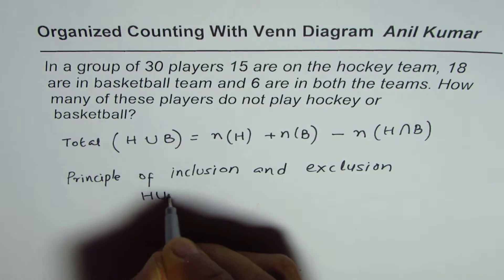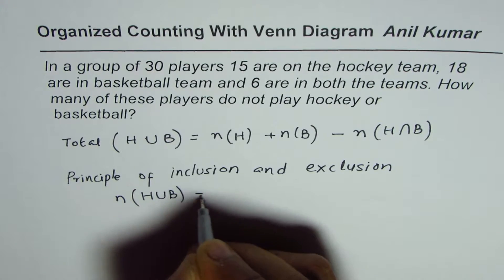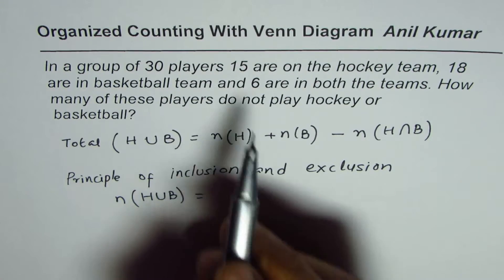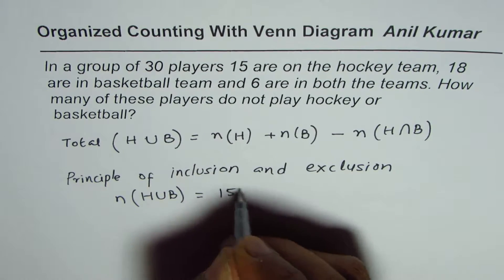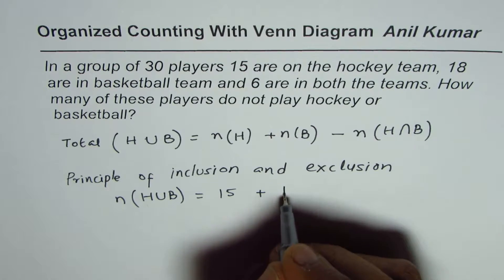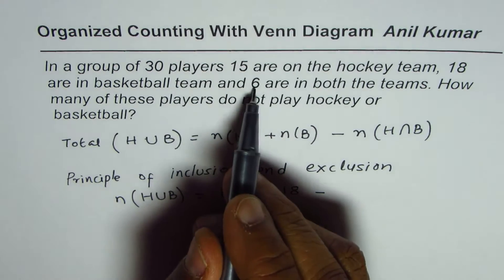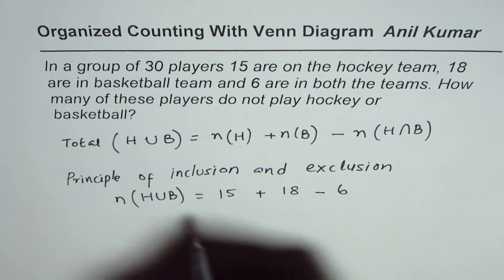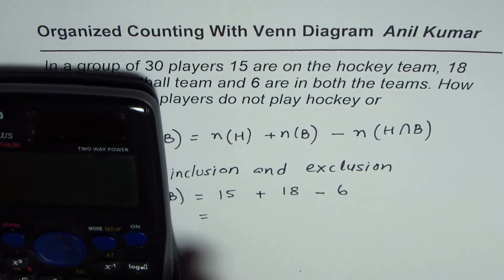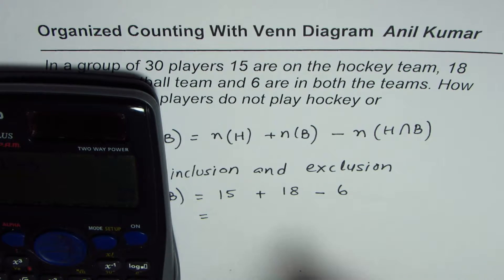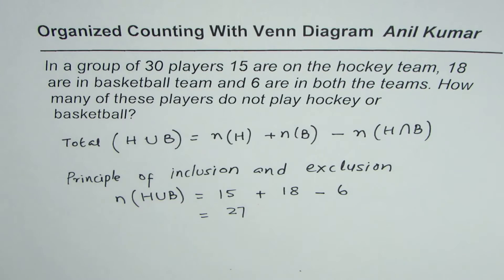So H union B — the number of players is equal to the number of hockey players. We are given 15 are in the hockey team, so it is 15. Plus in the basketball team there are 18. Take away the common players, which is 6. So we have 15 plus 18, take away 6, equals 27. So 27 players are in the hockey and basketball teams.